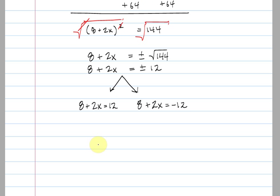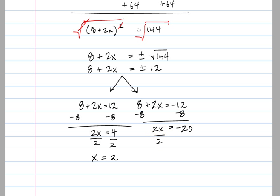And now we need to just solve these two simple equations. So, I'll go ahead and start with this one over here on the left. Subtract 8 from both sides and we're left with 2x equals 4. Divide both sides by 2, and our solution for this equation is 2. And on the left equation here, I'm going to subtract 8 from both sides. I'm left with 2x equals negative 20. Dividing both sides by 2 gives me x equals negative 10.